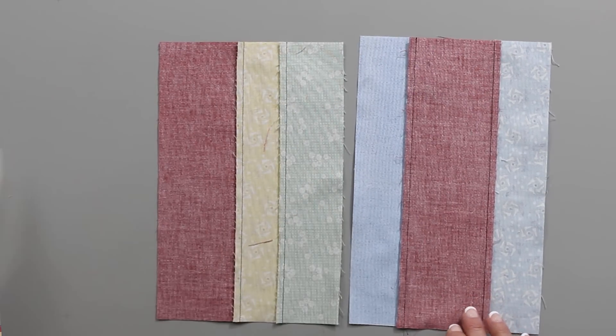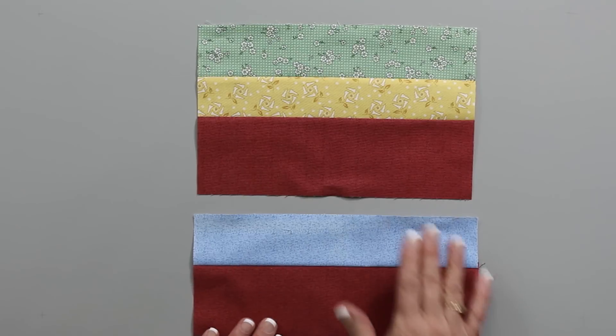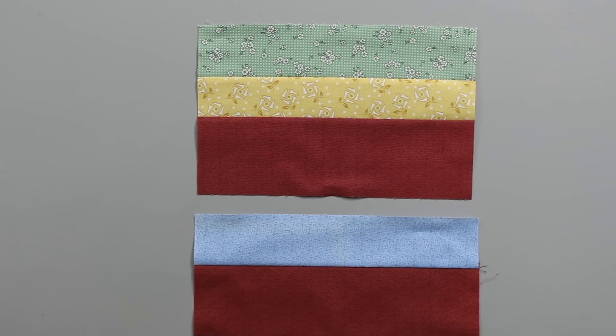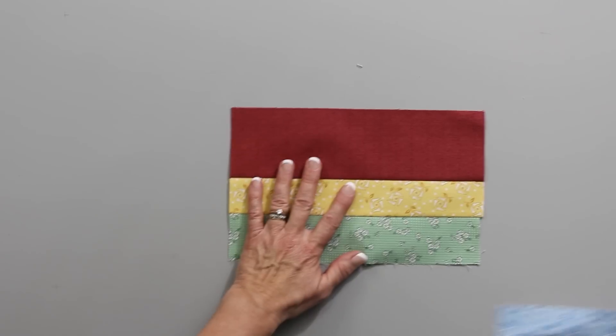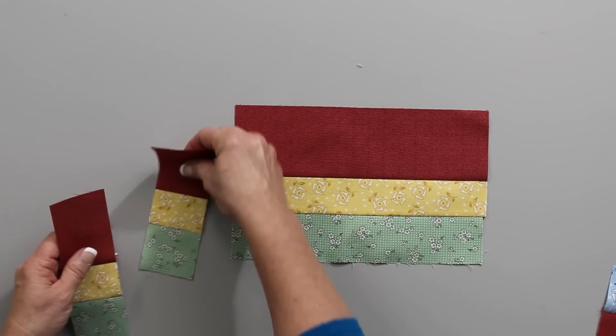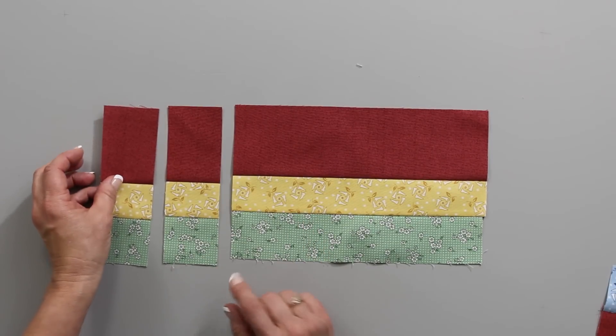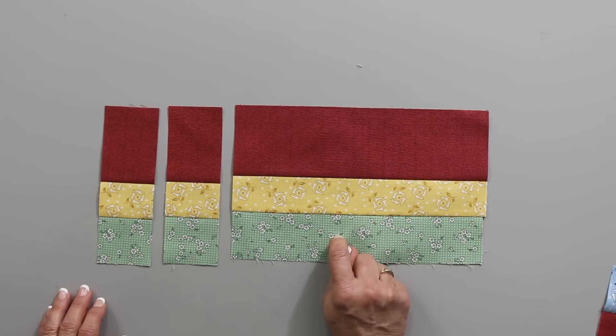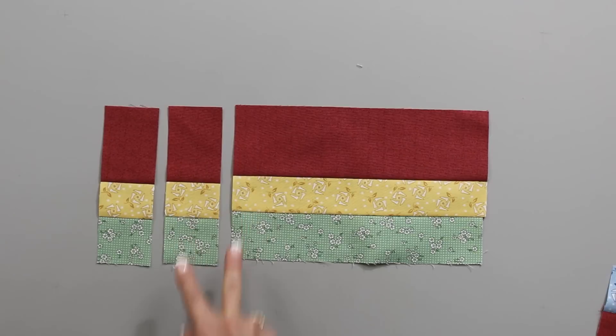Then we're going to work on sub cutting these. And this is where you really need to pay attention because what you sub cut from strip set one is going to be different than what you sub cut from number two. We're going to take strips that have position one, two, and three. What we're going to do is sub cut those the same size as the position one strip. For my size, this was cut two and a quarter inches. So my sub cuts are two and a quarter inches.